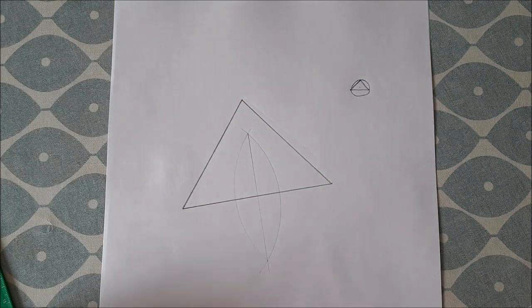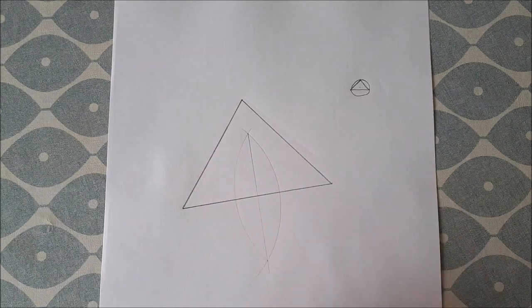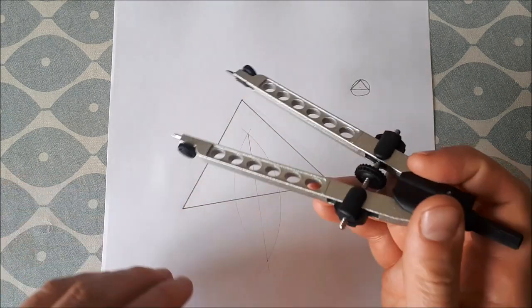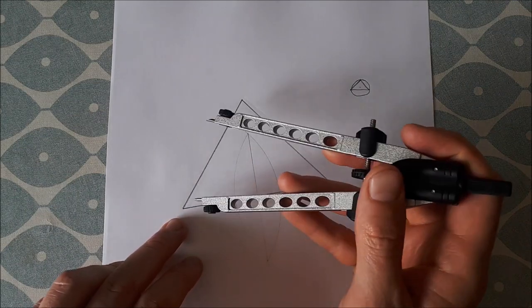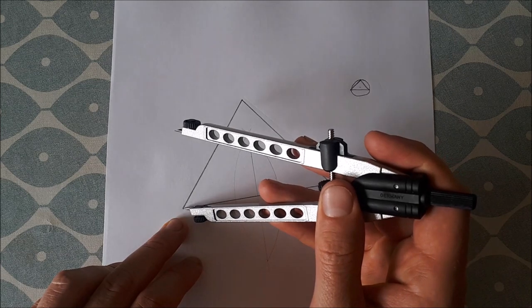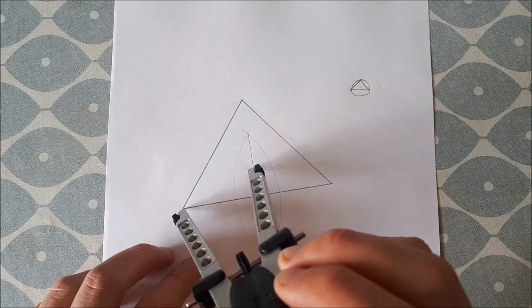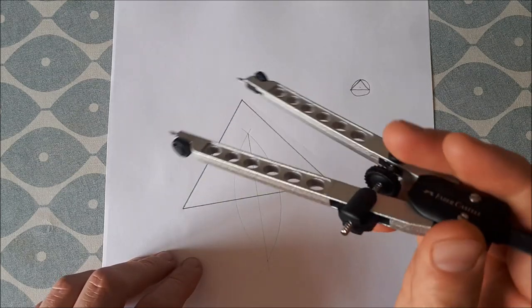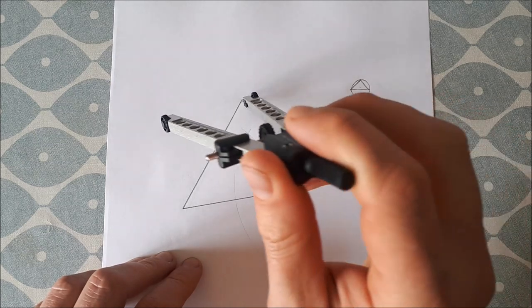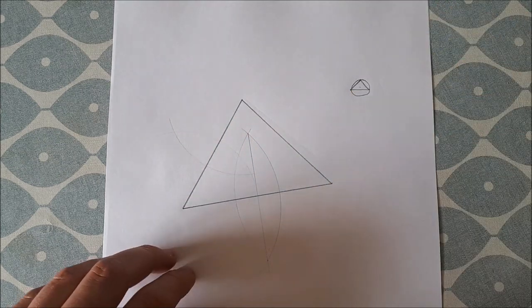That's our first perpendicular bisector. Then you can pick either of the other two sides. Keep your compass over half the length of that line segment, scribe an arc at this vertex, move it to the other vertex, and scribe an arc.